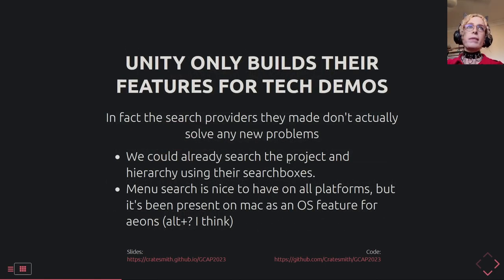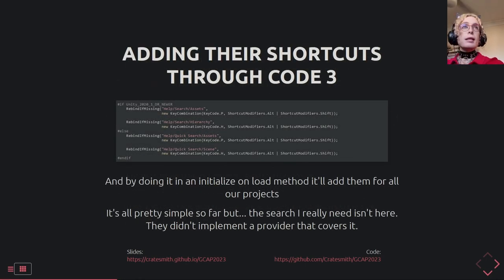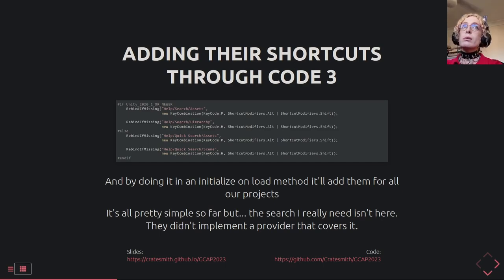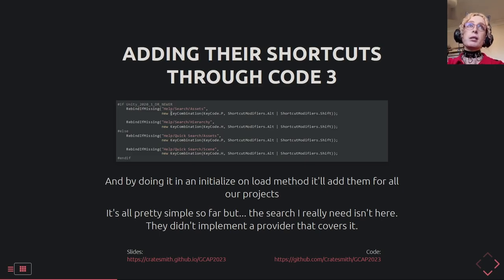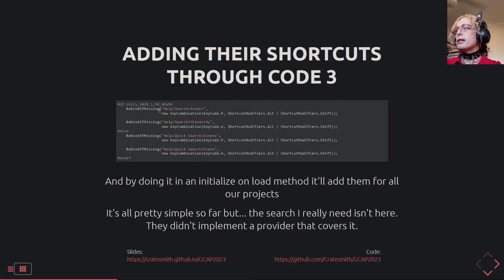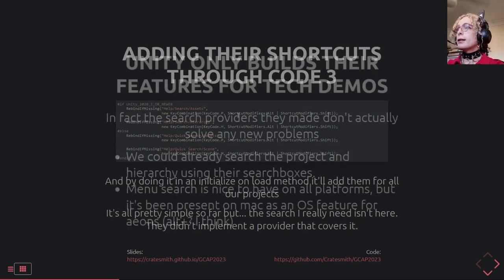So that assigns those shortcuts. These shortcuts changed between versions — they renamed QuickSearch to Search in 2021.1 and also renamed a couple of other things, so the shortcut paths changed. These shortcut paths match up to the ones present in the shortcut window — they're not necessarily the same as the main menu paths. I'm just rebinding the existing shortcut for 'search assets' (which is search the project) and the hierarchy.